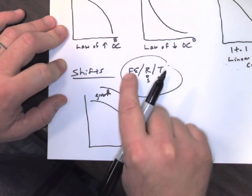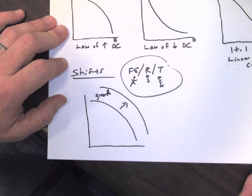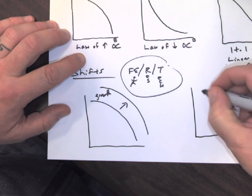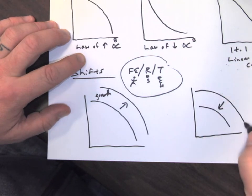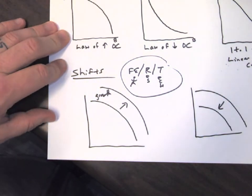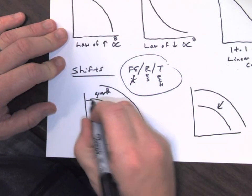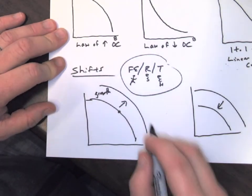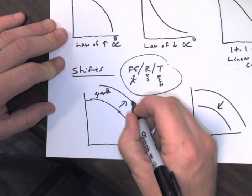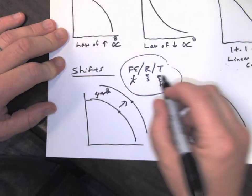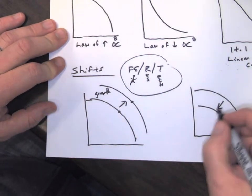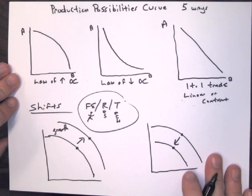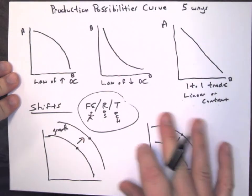If we lose some of our employees, our resources, our technology, our education, our health care, our workforce — any of those things — that would make the production possibilities curve shift inward, and we would lose some of our GDP capabilities. We can produce on any point on this curve at full employment and get all the GDP that is possible. If we add any of these three items, we grow and make more GDP; if we lose any of them, our GDP capability decreases. Those are our production possibility curves and the five different ways they can be drawn.